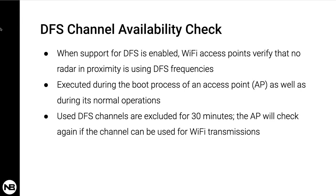If the AP detects that a radar is using a particular DFS channel, then it will exclude that channel from the list of available channels. This state will last for 30 minutes, after which the AP will check again if the channel can be used for Wi-Fi transmissions.